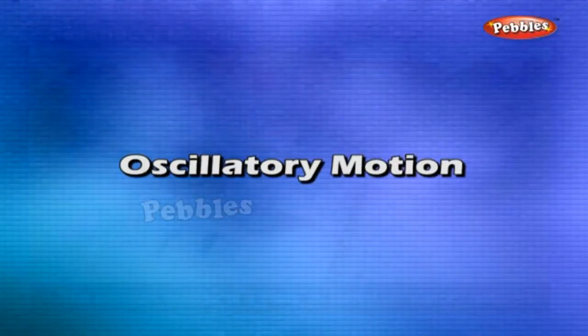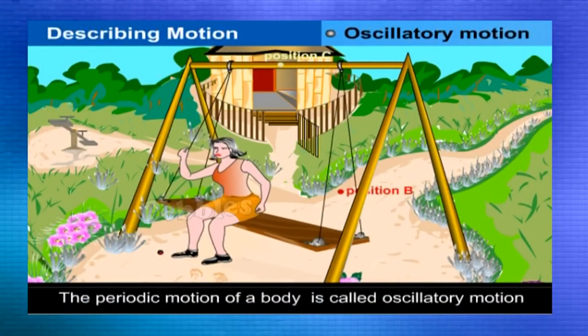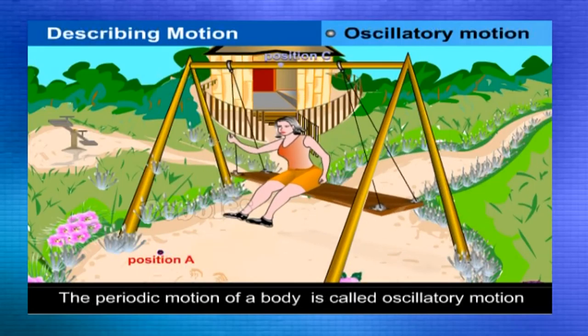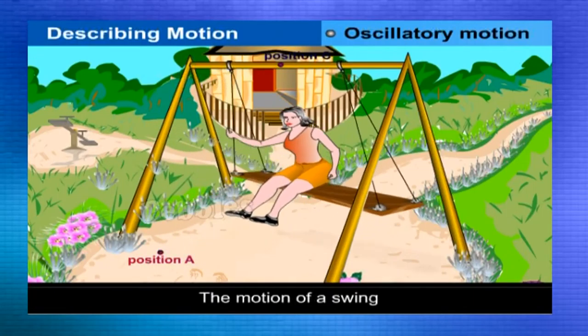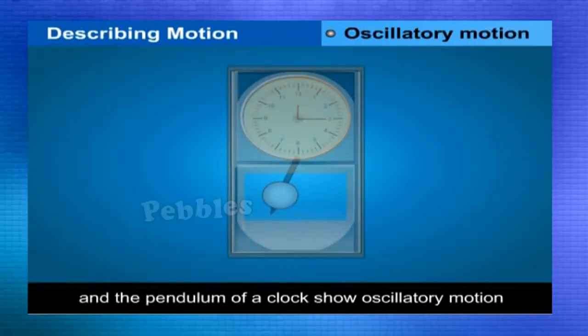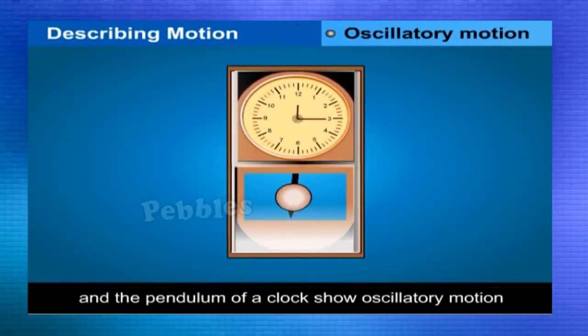Oscillatory motion is that in which a body moves to and fro about its mean position. The motion of a swing and the pendulum of a clock show oscillatory motion. The leaves and branches of the plant also show to and fro movement under the influence of the wind.